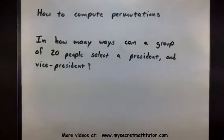Welcome to My Secret Math Tutor. We're going to cover an interesting example on how to compute permutations. This will help us answer this question here: In how many ways can a group of 20 people select a president and a vice president?